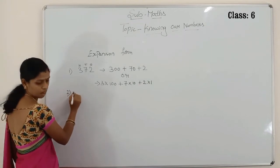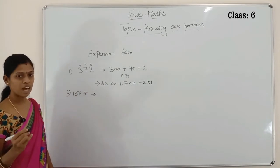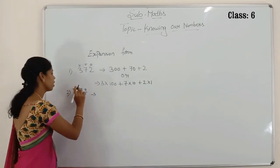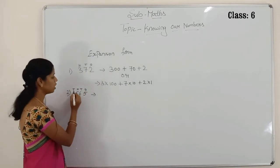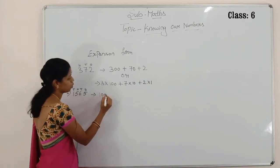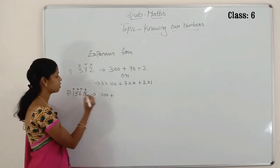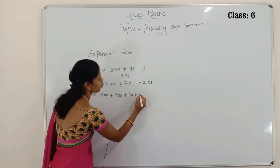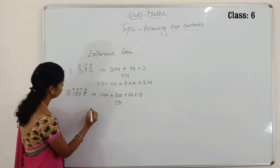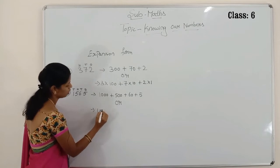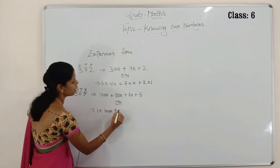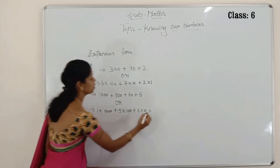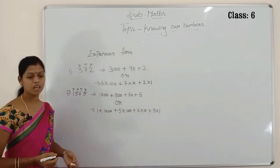Now I am taking the 4-digit number. Always first place the place values: ones, tens, hundreds and thousands. In the expanded form: 1 is in the thousands place, plus 5 is in the hundreds place, plus 6 is in the tens place, plus 5 is in the ones place. Or you can write the second method: 1 in the thousands, 5 in the hundreds, 6 in the tens, 5 in the ones. Both methods are the same.